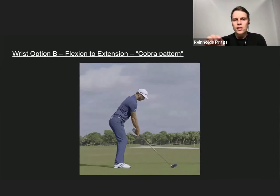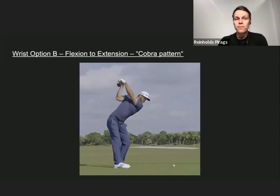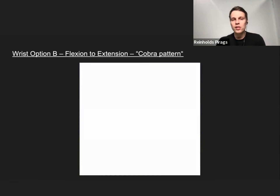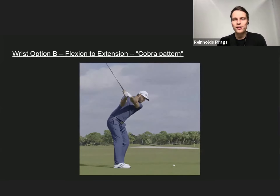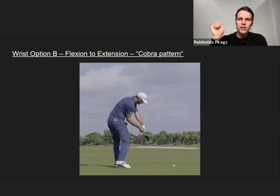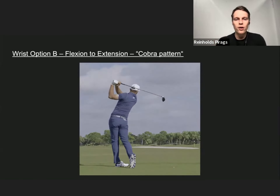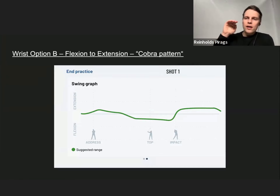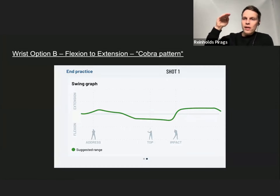This is contrasted with the second type, wrist option B — the flexion to extension pattern, also called the DJ pattern or cobra pattern. It's called the cobra pattern because the trail wrist is very bent, like a cobra curled up. While the stable extension pattern stays flat from address to the top, this pattern does the complete opposite — going down into flexion at the top, nearly 100 degrees opposite.